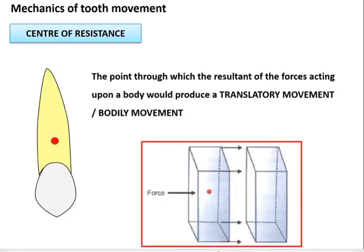Center of resistance is the point through which resultant forces acting upon a body produce a translatory or bodily movement. When a force is applied at the center of resistance, the body translates in the opposite direction of the applied force. In simple terms, it is the point at which a force application results in translatory movement.